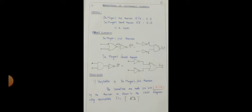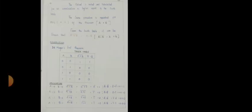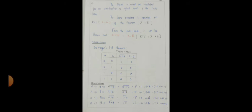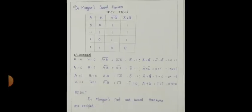You are going to change only one thing, which I will mention in black color. In this picture we are going to see the truth table and its calculation for the first theorem. Now De Morgan's second theorem: truth table, its calculation, and result. If you write this you can get full marks for De Morgan's theorem.